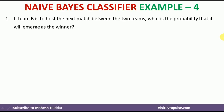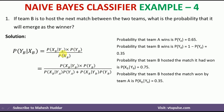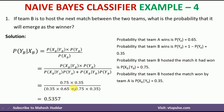The first question is: if team B is to host the next match, what is the probability that it will emerge as the winner? Using Bayes' theorem, the probability that B will win the match given B has hosted it equals P(XB | YB) multiplied by P(YB) divided by P(XB), where P(XB) equals P(XB | YA) times P(YA) plus P(XB | YB) times P(YB). Substituting all values, we get the probability as 0.5357.